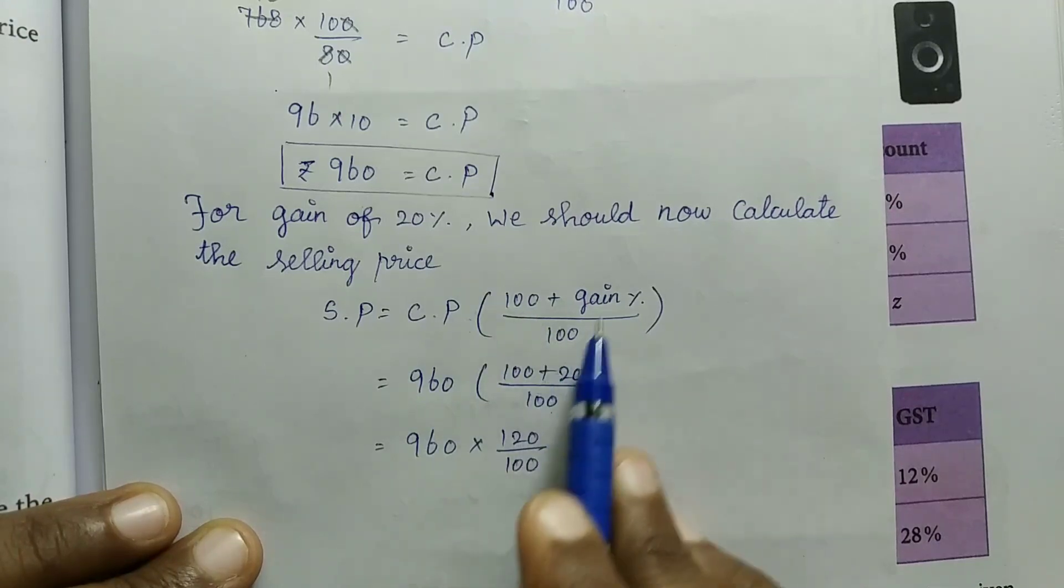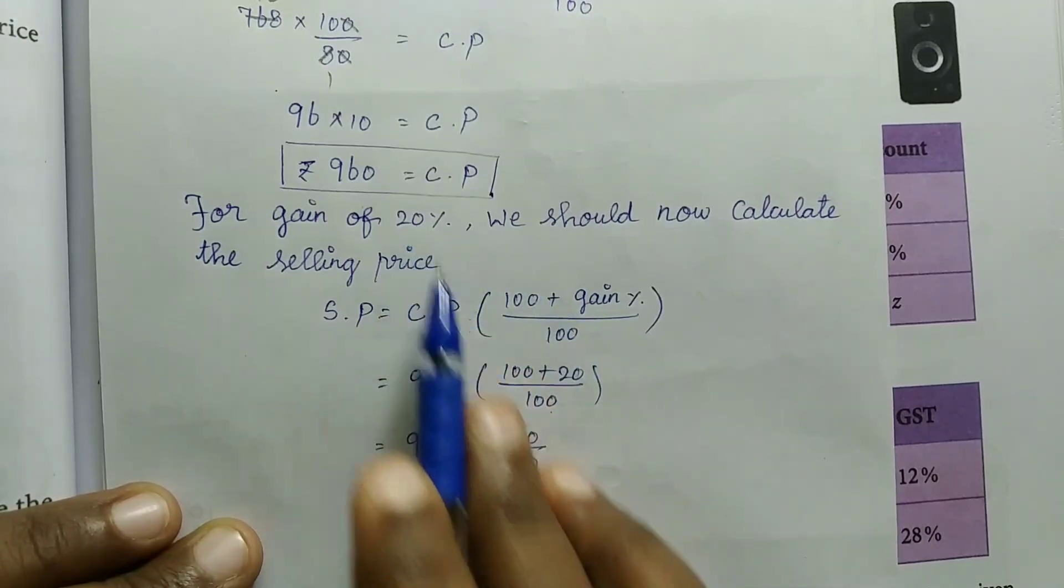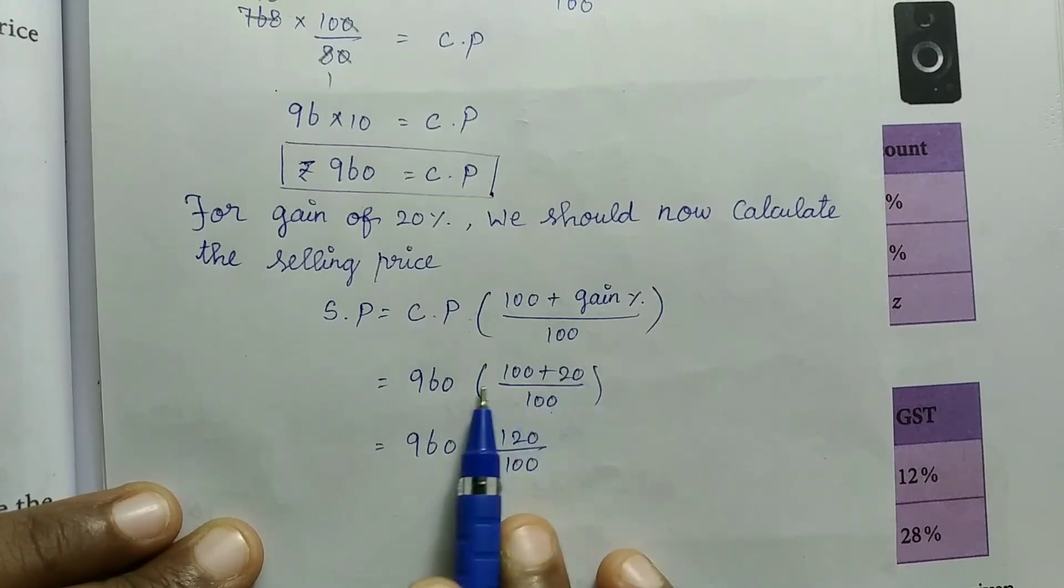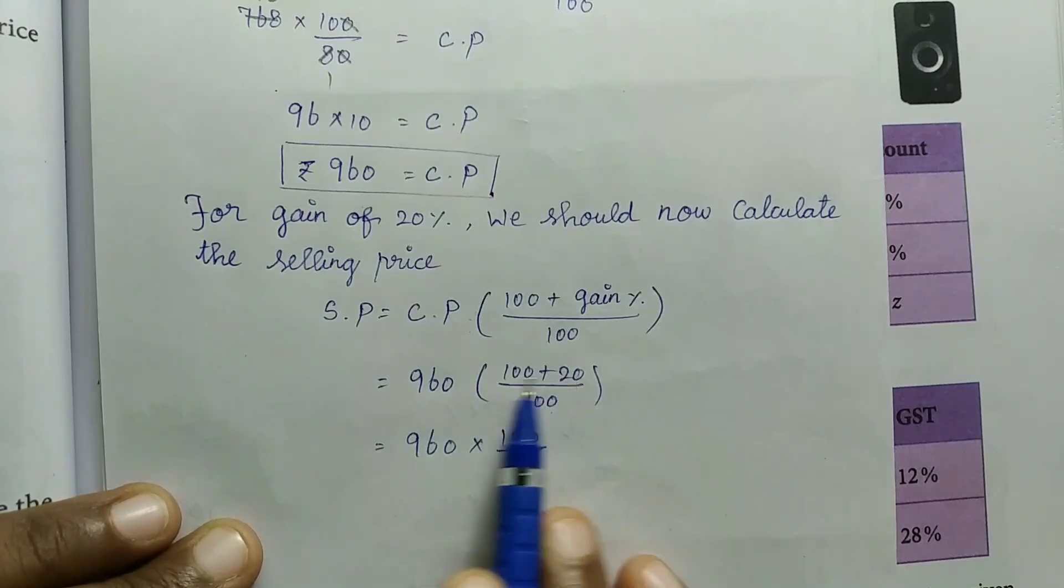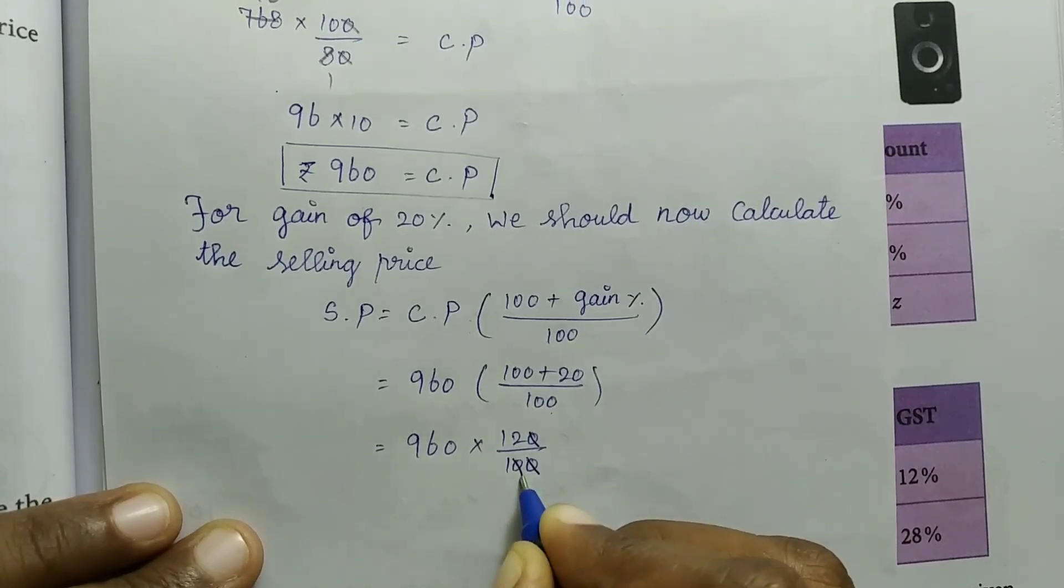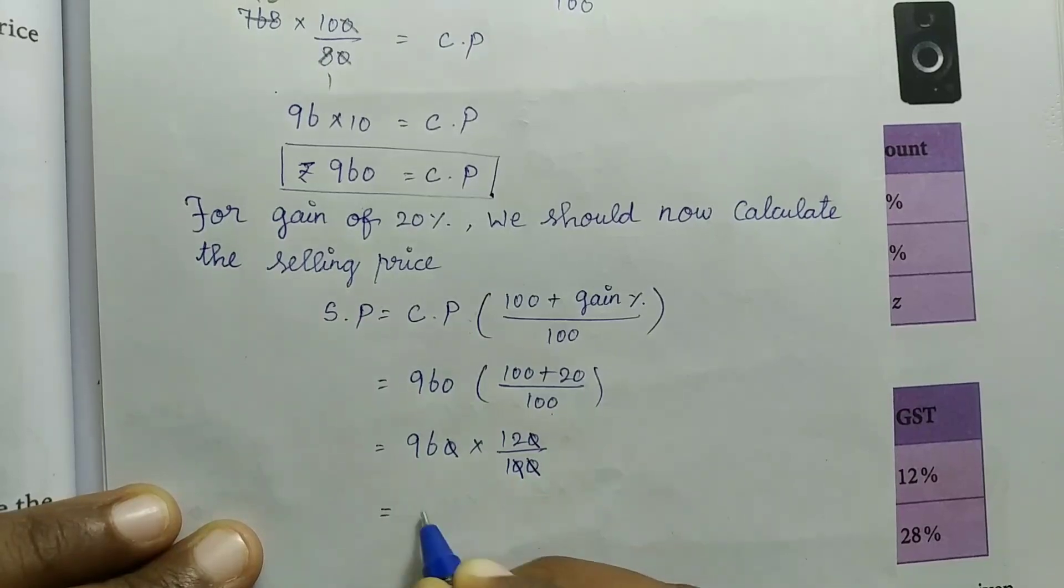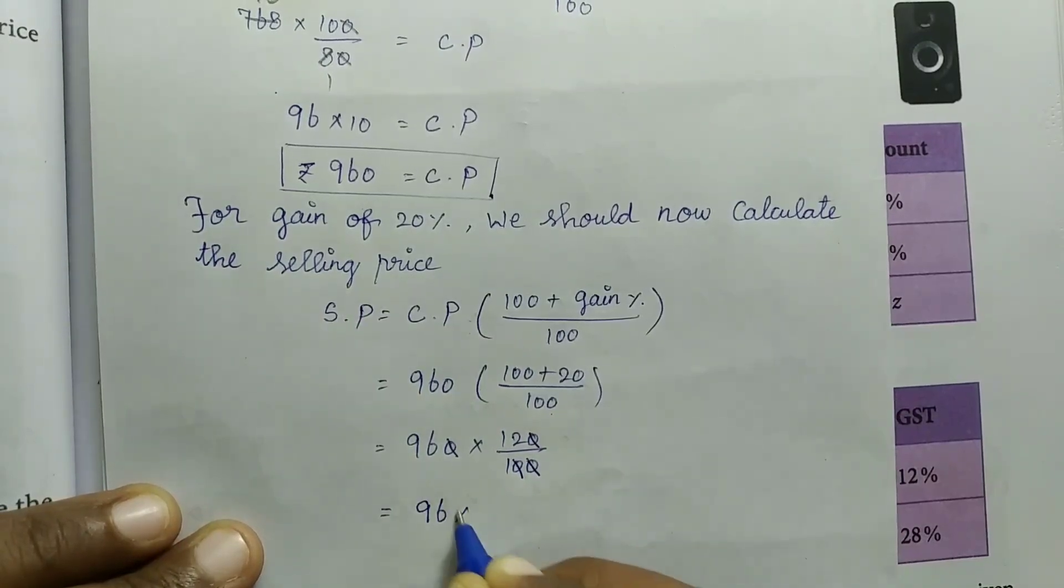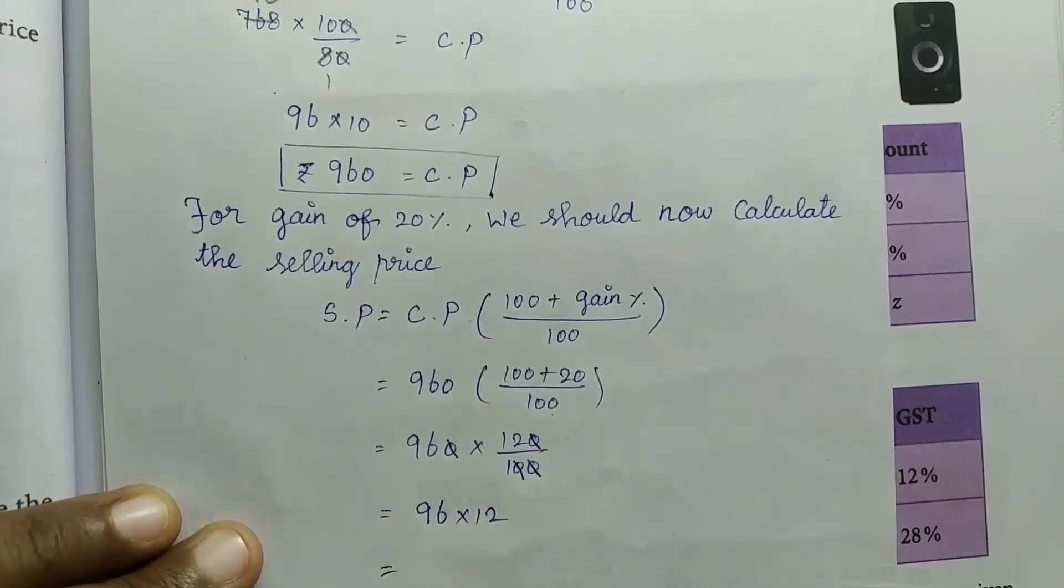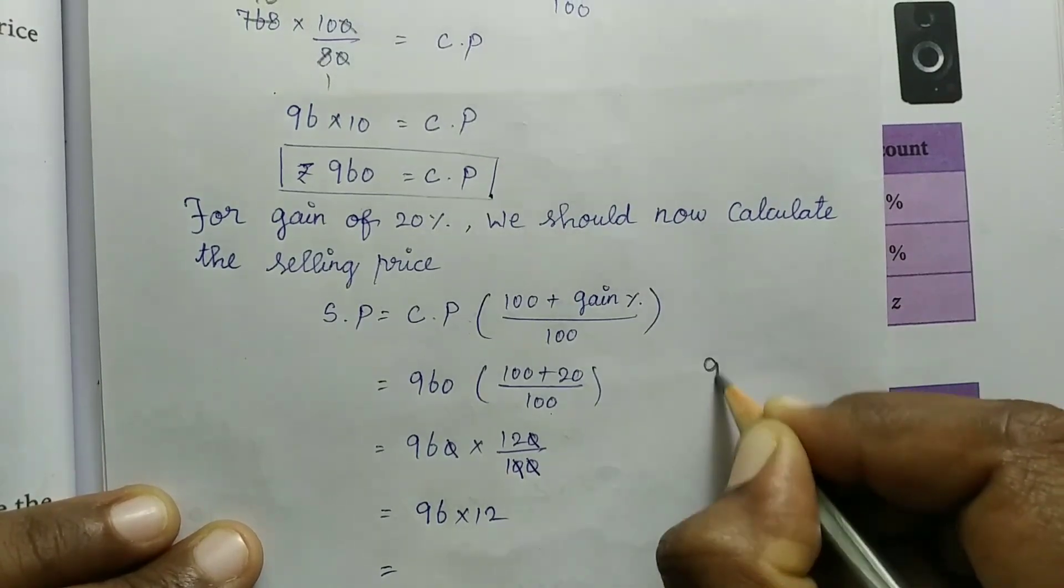So SP = 960 × (100 + 20) / 100 = 960 × 120 / 100. Canceling zeros, the remaining value is 96 × 12.